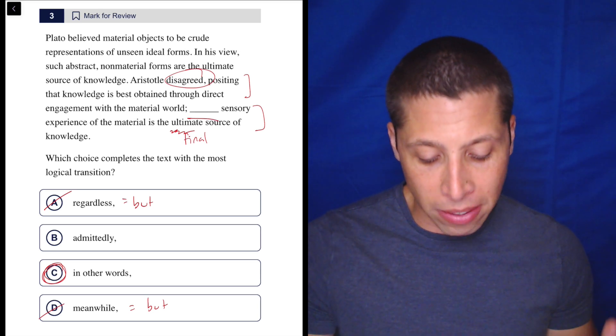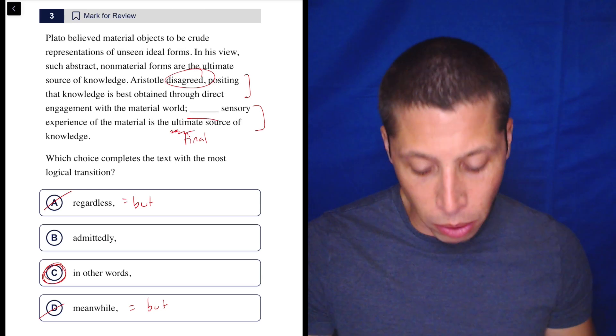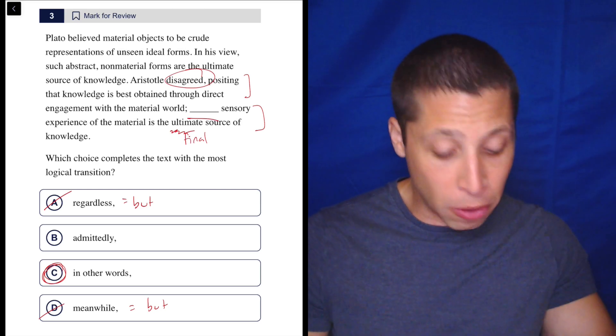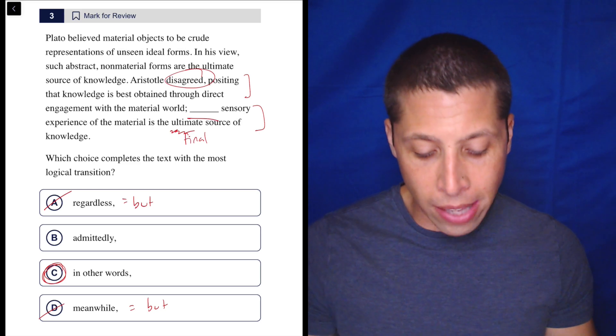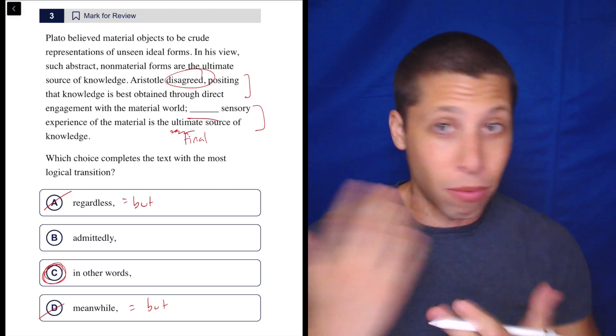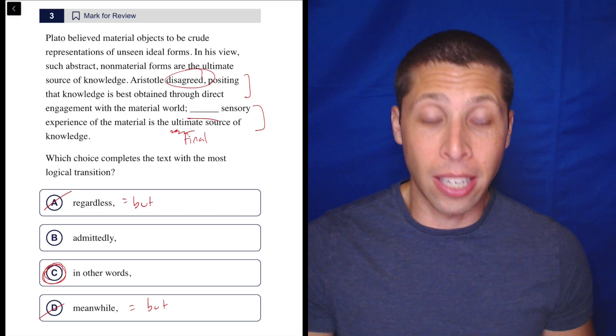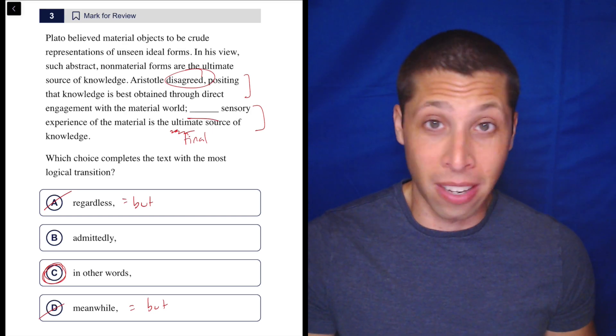Aristotle says knowledge is best obtained through direct engagement with the material world. So what would direct engagement be? Sensory experience of the material world is the ultimate source of knowledge. Literally, it's saying the exact same thing, but rearranging the words, maybe slightly changing them. This is as clear cut a case of 'in other words' as I've ever seen on the SAT.